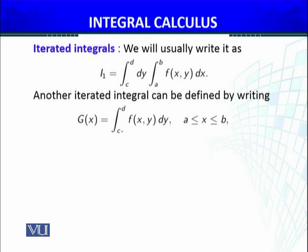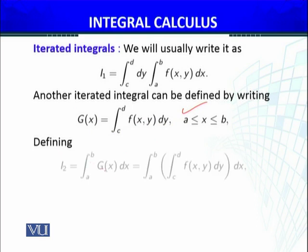We know how we have defined iterated integral. We defined I₁ in this way. Similarly, G(x) = ∫[c to d] f(x,y) dy we can define. Defining I₂, the iterated integral has changed order as I told you before. Whether these two iterated integrals that we have defined are equal.